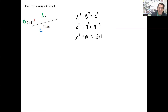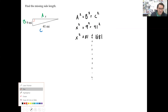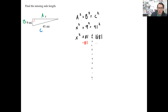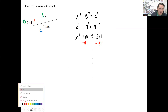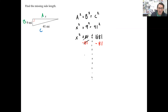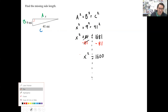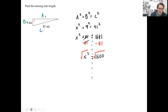Now I just need to solve this equation for X. I'm going to subtract 81 from both sides — 81 minus 81 cancels out — so X squared equals 1,681 minus 81, which is 1,600. Take the square root of both sides. Square root of X squared is X, and square root of 1,600 is plus or minus 40. Again, we're dealing with distance, so we just use positive 40.